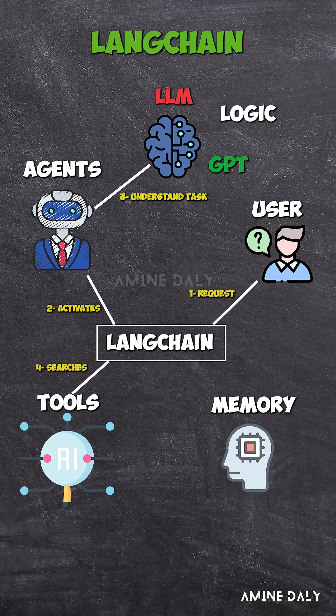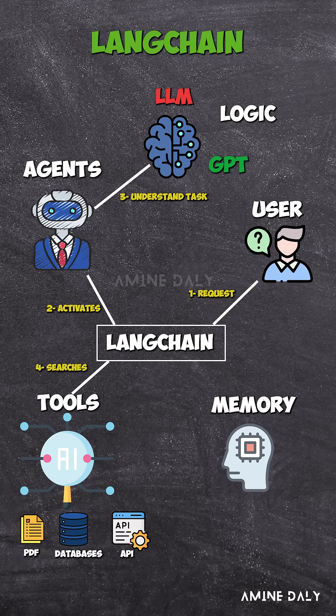Step 3: It searches documents, like PDFs, vector databases, or private knowledge bases. Step 4: It calls external APIs for real-time data or specific services. Step 5: It stores context in memory, so it can use that info again later.